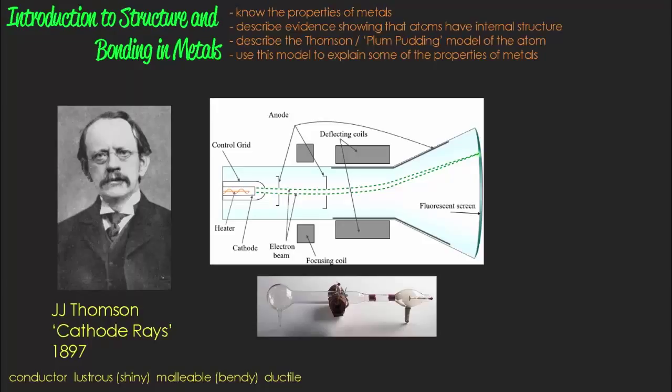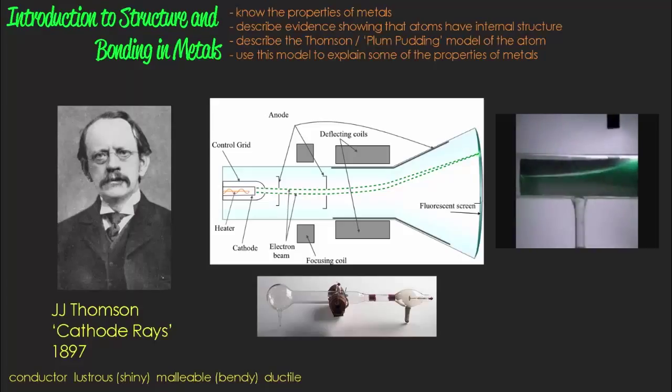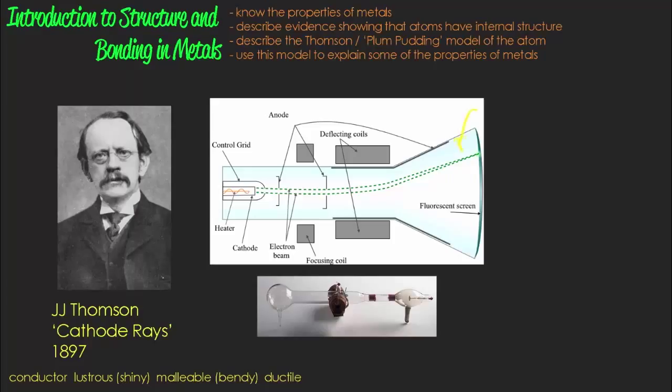This beam of particles was invisible but a special phosphorescent coating glowed where the beam hit it and that allowed him to see the path that the beam was following. By experimenting with magnets and electric fields he was able to determine that things in this beam had a negative charge by the way that the beam was bent around or deflected.